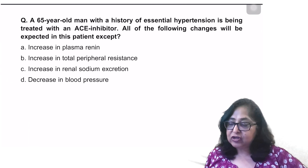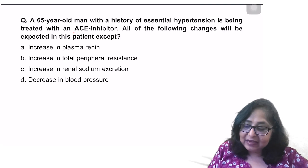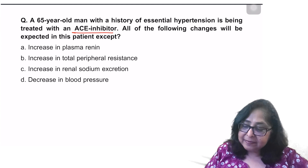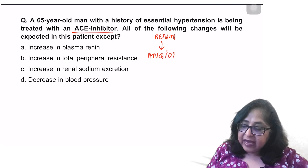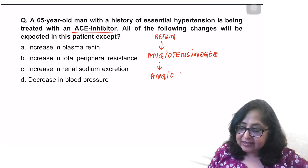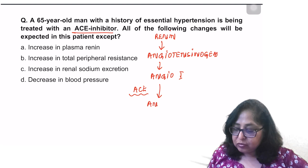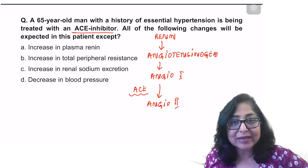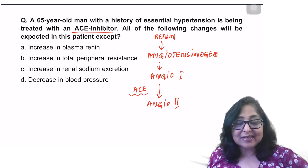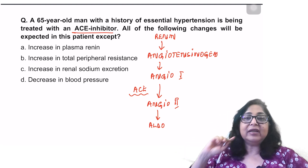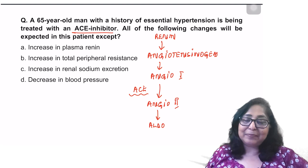A 65-year-old man with a history of essential hypertension is being treated with an ACE inhibitor. All of the following changes will be expected in this patient. The renin-angiotensin-aldosterone mechanism: renin acts on angiotensinogen, converting it into angiotensin 1, which is then converted by the angiotensin-converting enzyme present in the lungs to angiotensin 2. Angiotensin 2 is a very powerful vasoconstrictor that increases total peripheral resistance and aldosterone secretion from the adrenal cortex; aldosterone increases sodium reabsorption and potassium secretion.